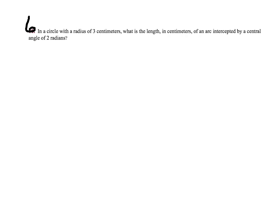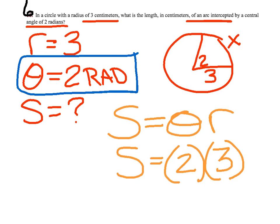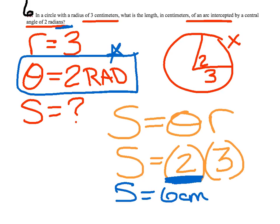Last one: a circle with a radius of 3 and theta of 2 radians — no conversion needed since it already says radians. The question is: what is the length of the arc? S equals theta r, so s equals 2 times 3, giving an arc length of 6 centimeters. Hope you had a good night with your notes, and we look forward to seeing you tomorrow.